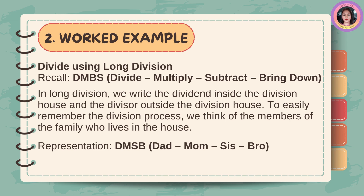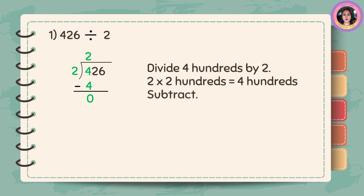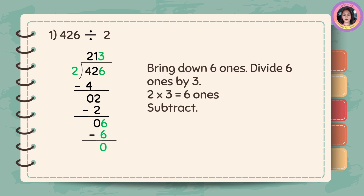For 426 divided by 2: divide 4 hundreds by 2; 2 times 2 hundreds is equal to 4 hundreds; subtract — 4 minus 4 is zero. Bring down 2 tens; divide 2 tens by 2; subtract — 2 minus 2 is zero. Bring down 6 ones; divide 6 ones by 2; 2 times 3 is equal to 6 ones; subtract — 6 minus 6 is zero.